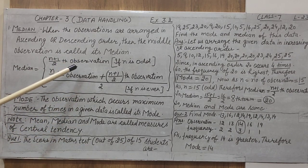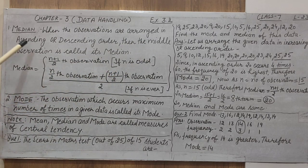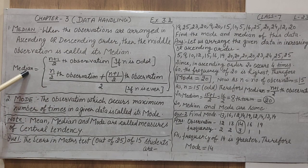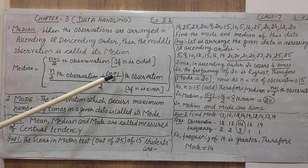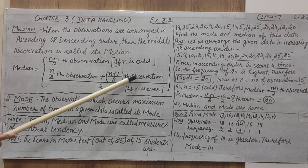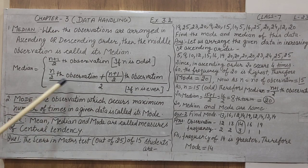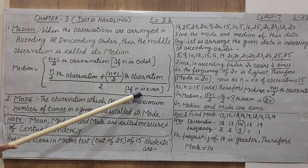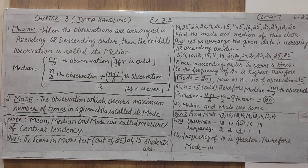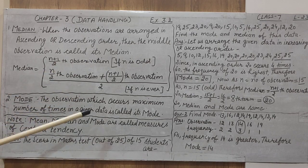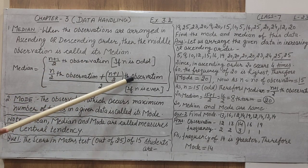Sometimes a question asks directly for the number of the middle observation and N is given, so you only use this formula. There is no need to arrange in ascending or descending order for that. The second case is when N is even — the total number of observations is even. Then there are two middle terms at the center, and we must find both middle terms and then find their average.